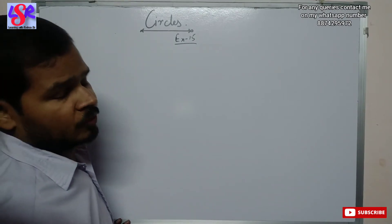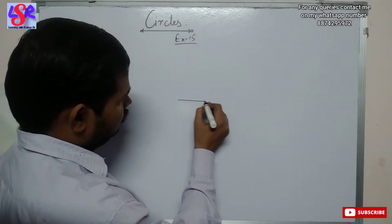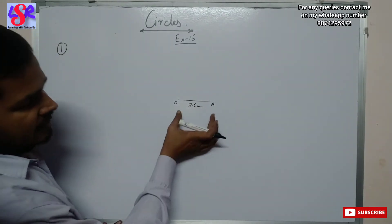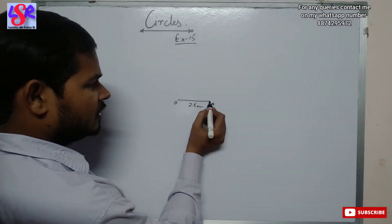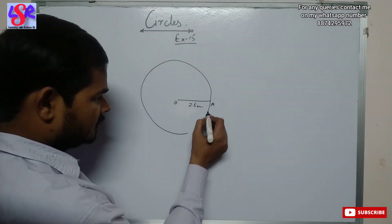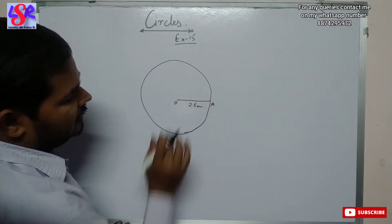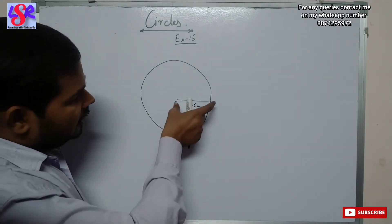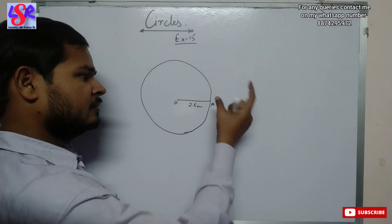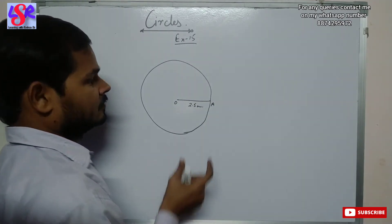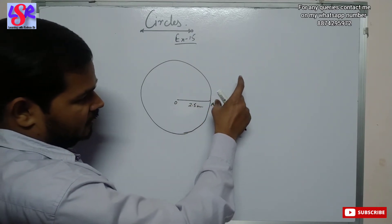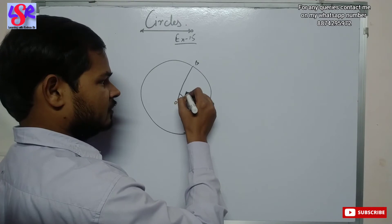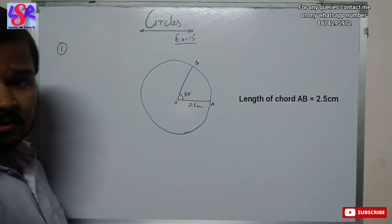We have to draw a circle of radius 2.5 cm. First, we draw a line of 2.5 cm using a scale — let this be O and this be A. Taking this as the radius, we complete the whole circle. Then we have to form an angle of 60 degrees as AOB, so we need point B. We keep the compass arc at A without changing it, and it will cut the circle at point B, giving angle AOB of 60 degrees. This is the required figure for question number 1.